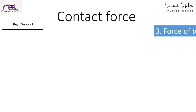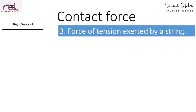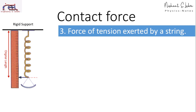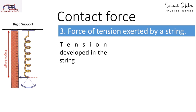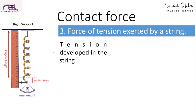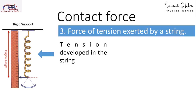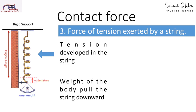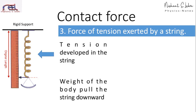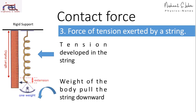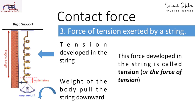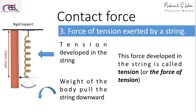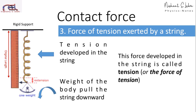The third example of contact force is force of tension exerted by a string. If there is a rigid support and we hook a spring over it and put weights, a tension develops in the string. The weight of the body pulls the string downwards, as you can see on the left-hand side of the screen. This force developed in the string is termed as tension, or force of tension.